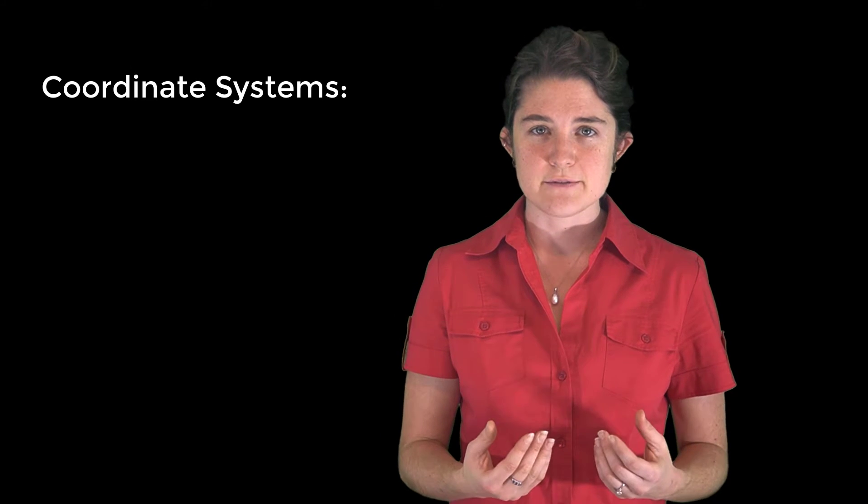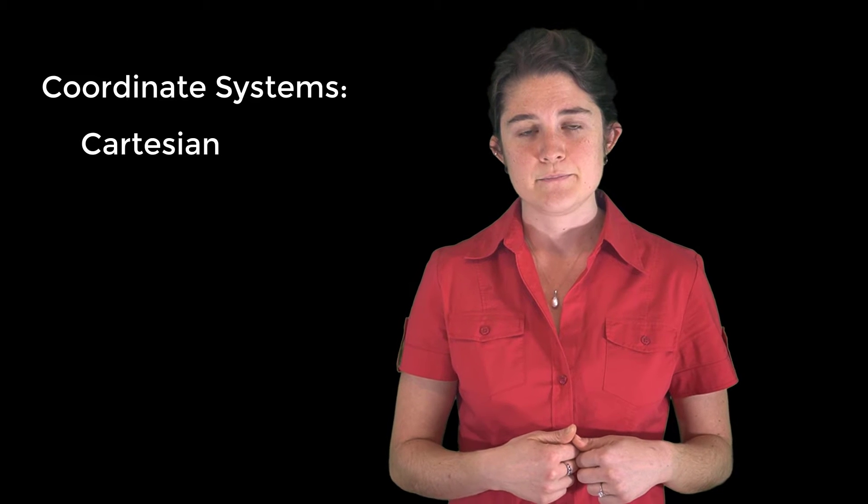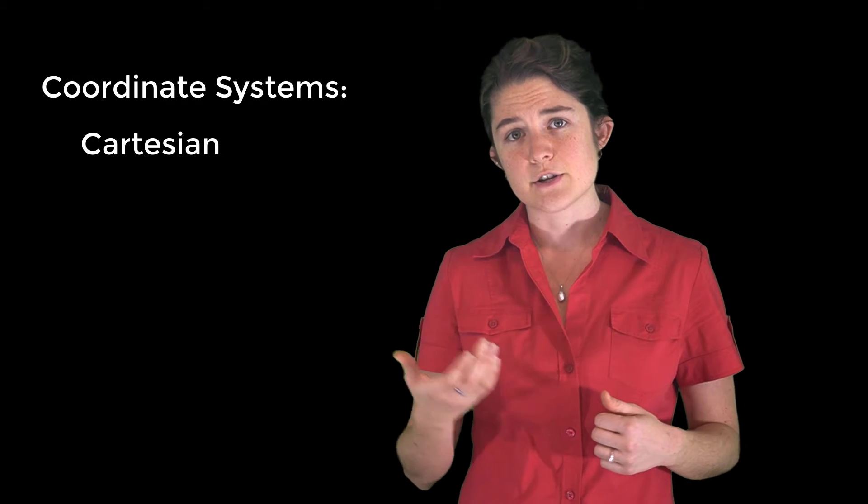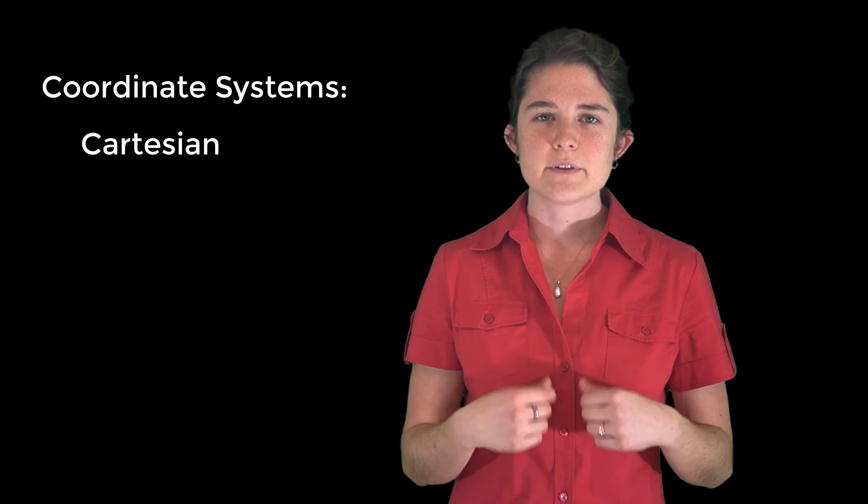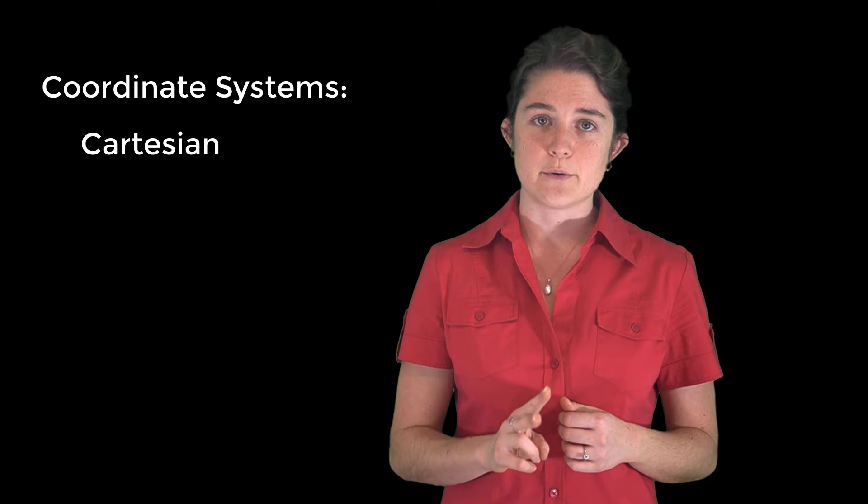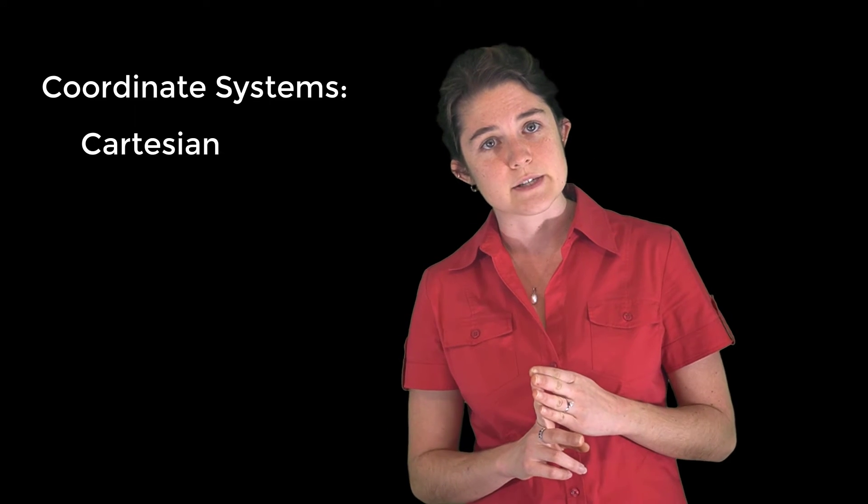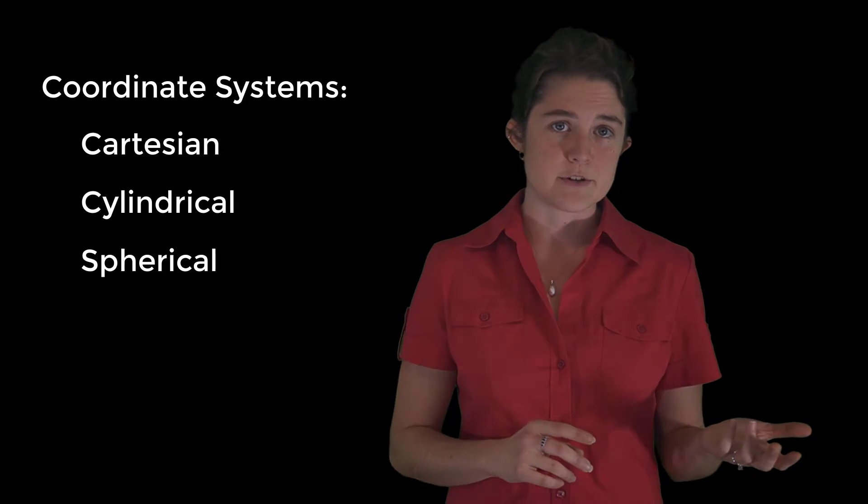So far we've been talking exclusively about the Cartesian coordinate system. Some problems are easier to solve using other coordinate systems, usually because of some form of symmetry in the geometry of the problem. For this class we'll be using two other coordinate systems, one useful for cylindrical symmetry and one useful for spherical symmetry.